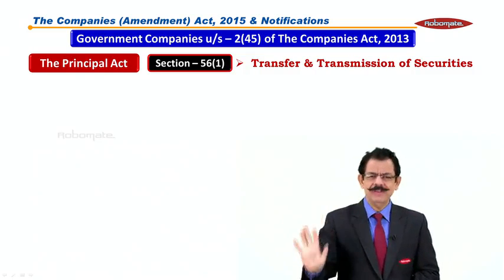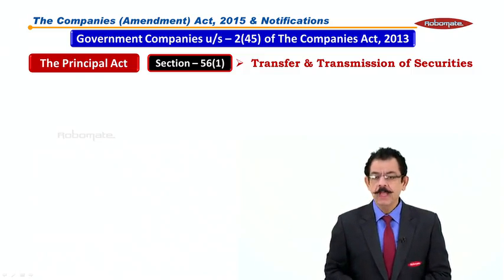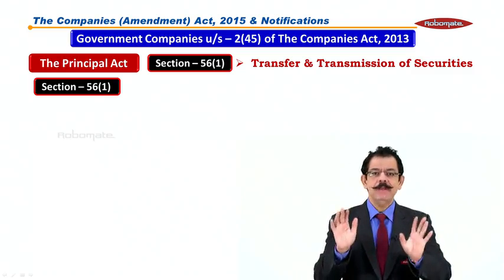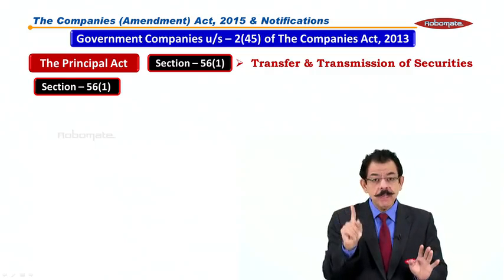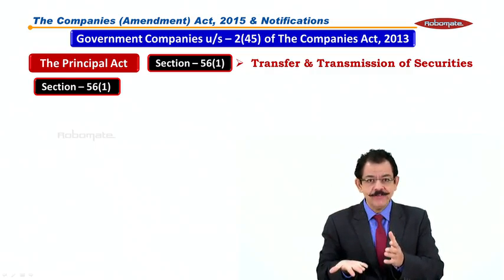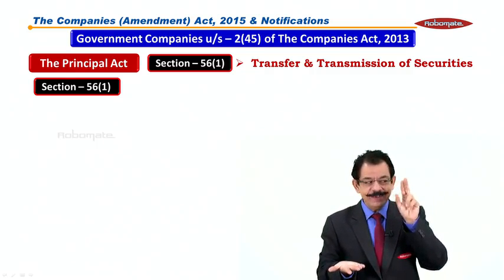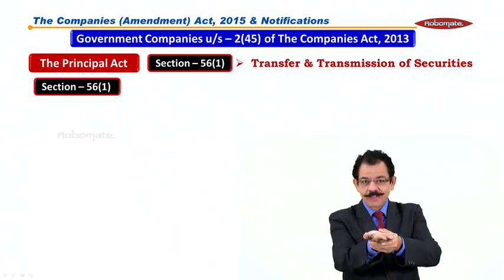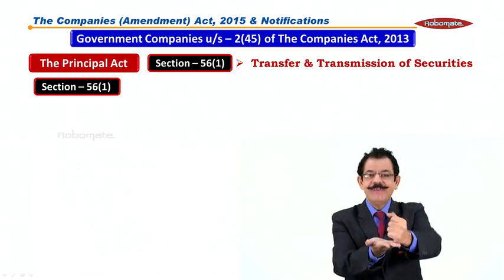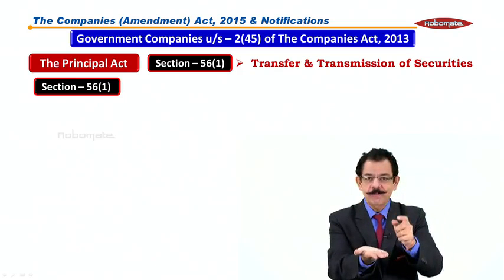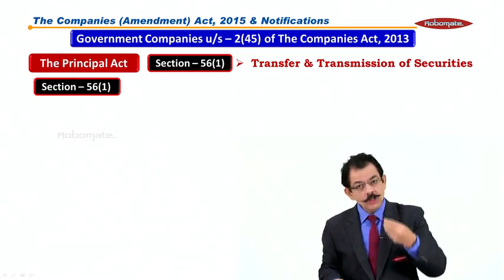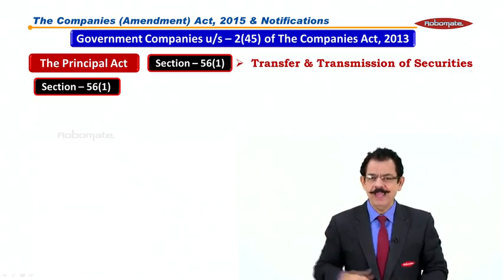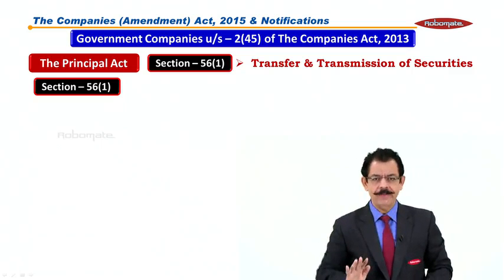Transfer and transmission of shares or securities — these are all instruments covered. This is important; keep your attention. In Section 56(1), I have told you about the share transfer procedure. First of all, we need to do an instrument of transfer using Form SH-4. The blank Form SH-4 is then to be submitted and filed with the Registrar, who will do the date stamping. After that, the instrument of transfer — Form SH-4 — is filed with the company, which will accordingly update the register of members. This is a very long procedure we have seen in the share capital chapter.